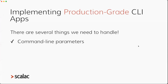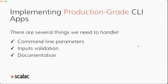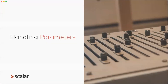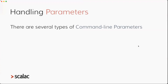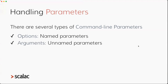For example, we need to think about command line parameters, we need to validate user inputs, and we need to handle documentation for our app. Focusing on the first part — command line parameters — there are several types we need to handle: options, which are named parameters; arguments, which are unnamed parameters; and subcommands as well.